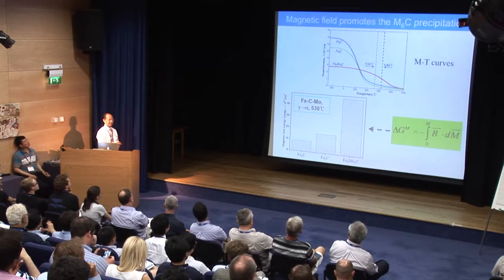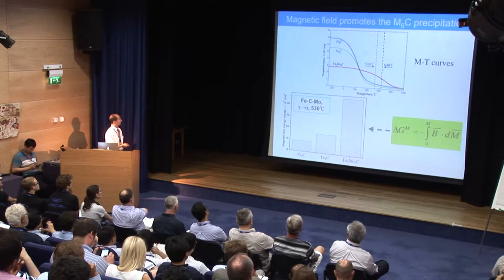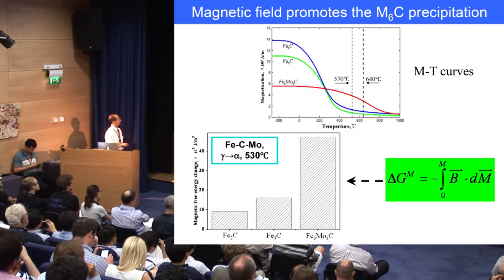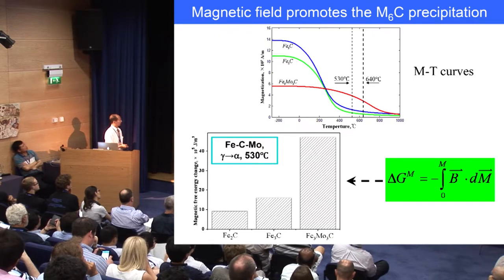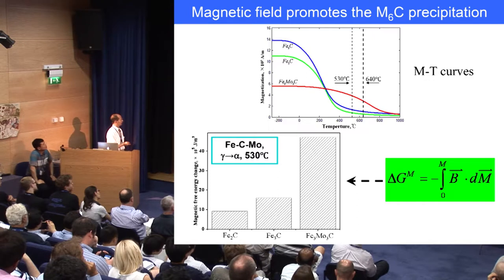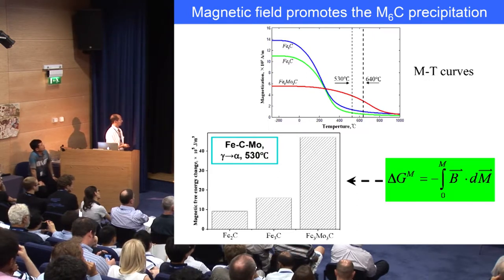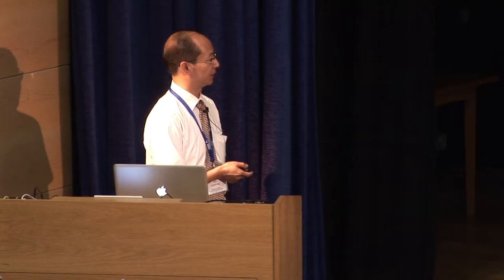This slide shows the calculated results. This figure shows the calculated magnetic moments of different austenoid carbides. This figure shows the magnetic free energy change. When this alloy transforms at an intermediate temperature, we can see that M6C has the highest magnetic free energy, so it is promoted by the magnetic field.